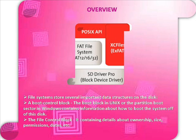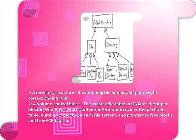The file control block contains details about ownership, size, permissions, dates, etc. A directory structure contains file names and pointers to corresponding FCB.